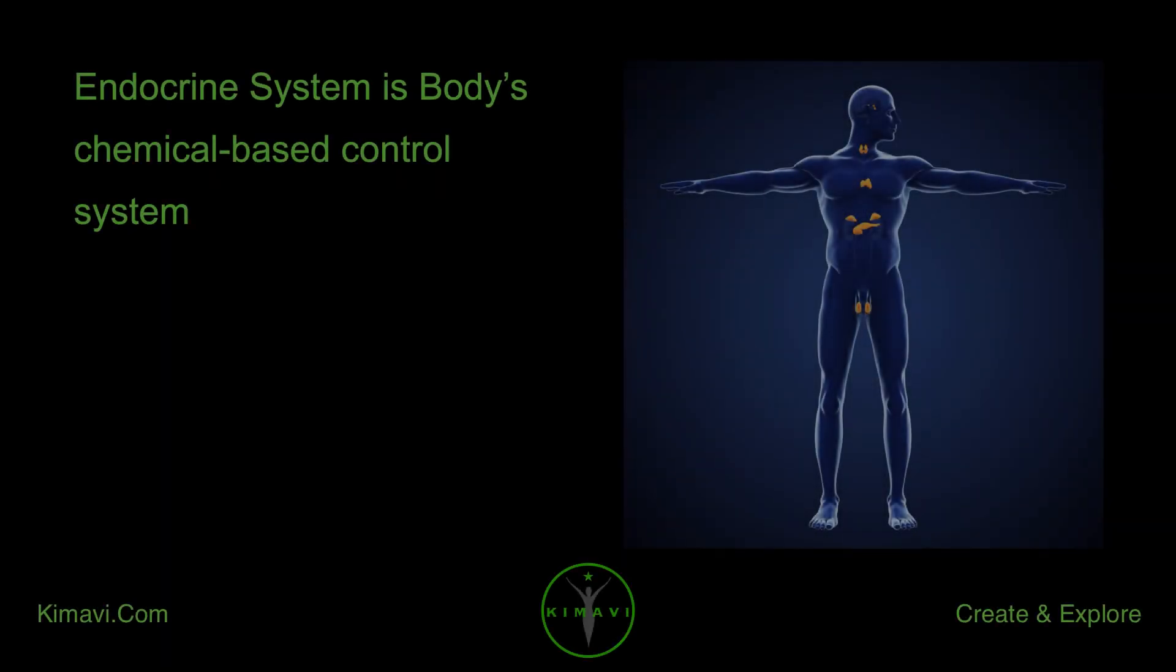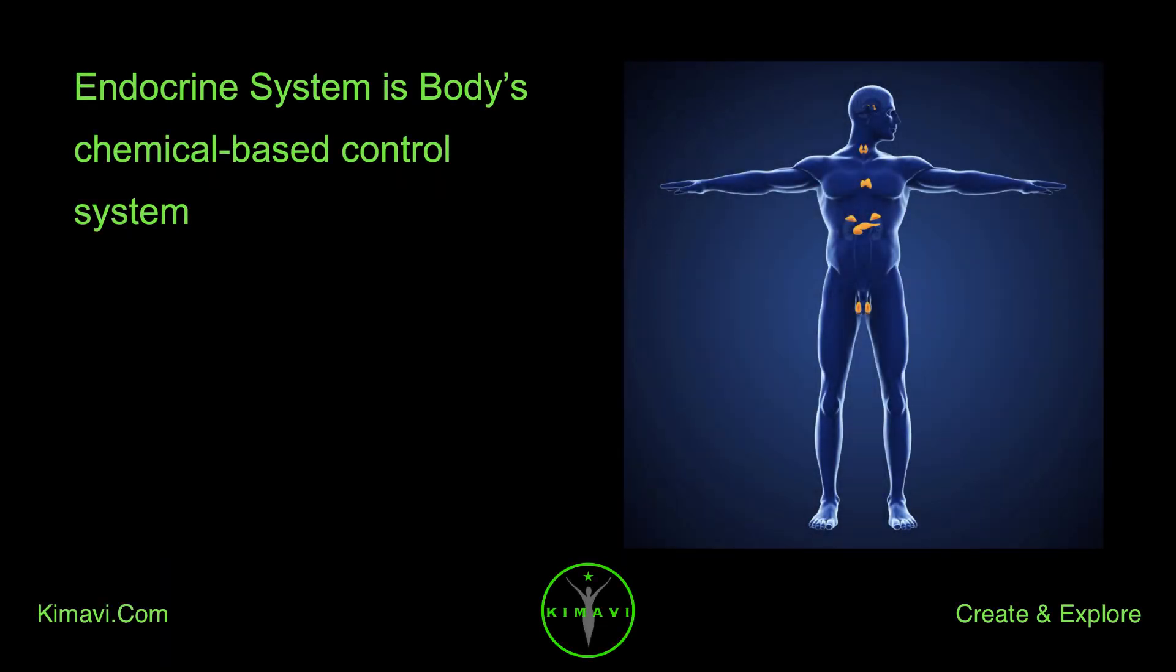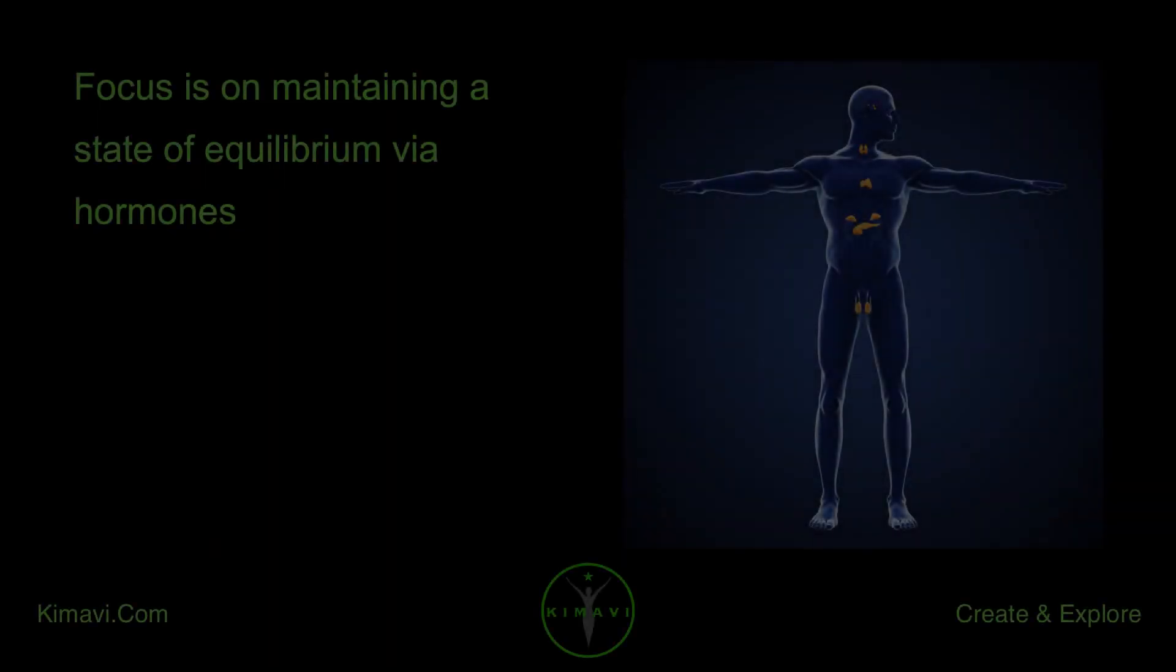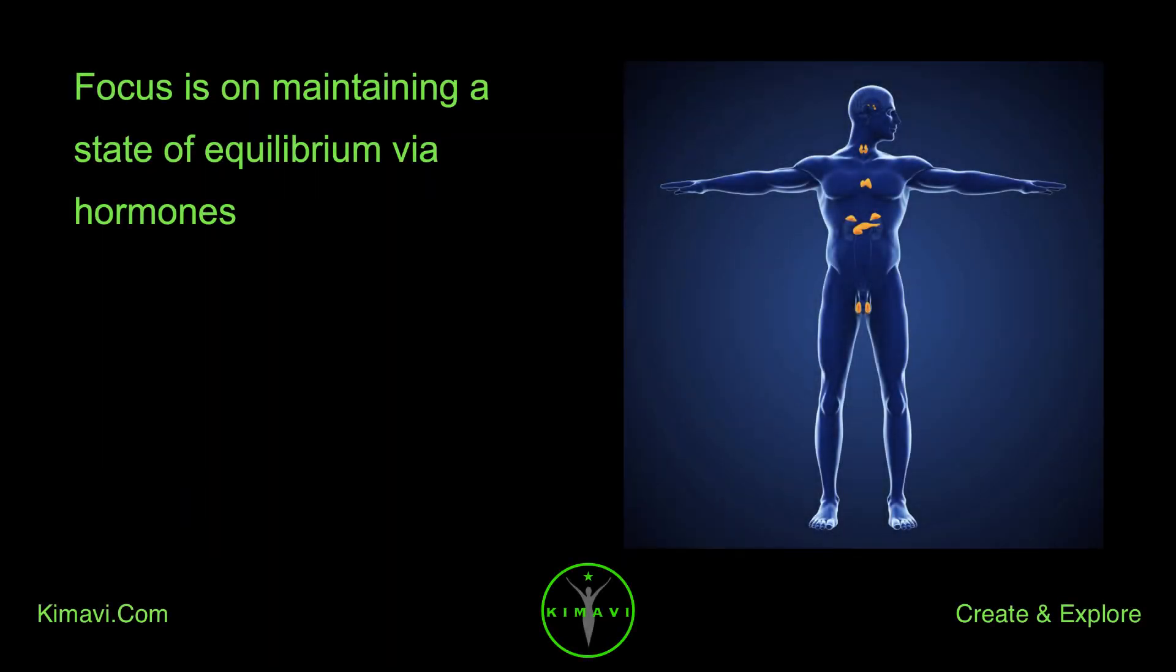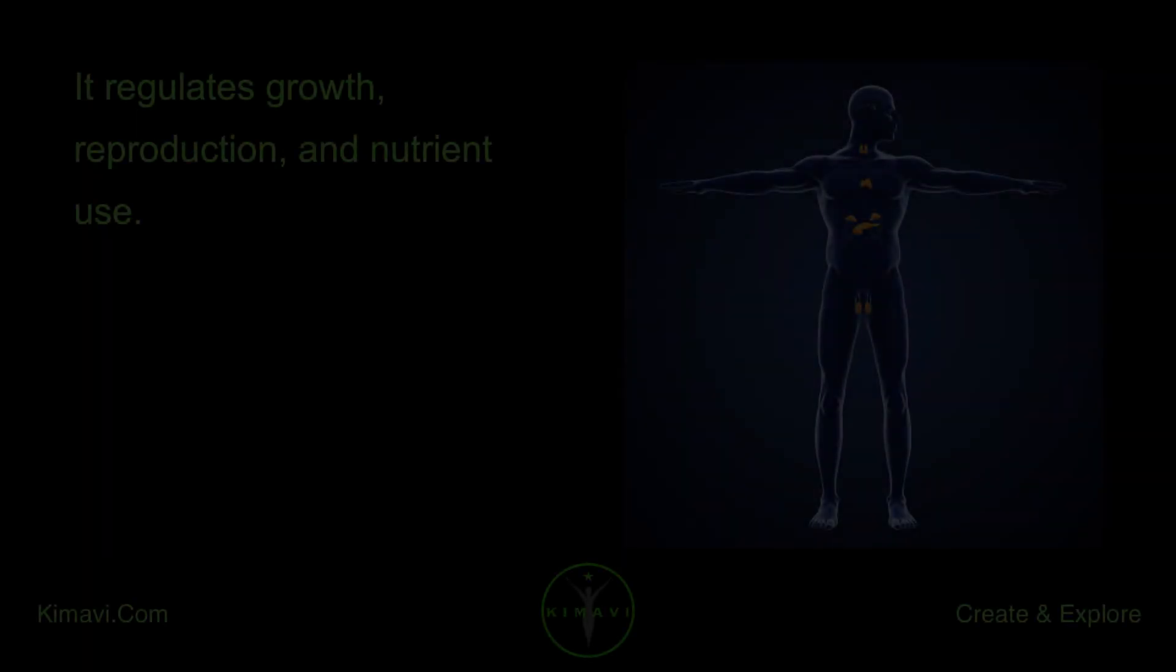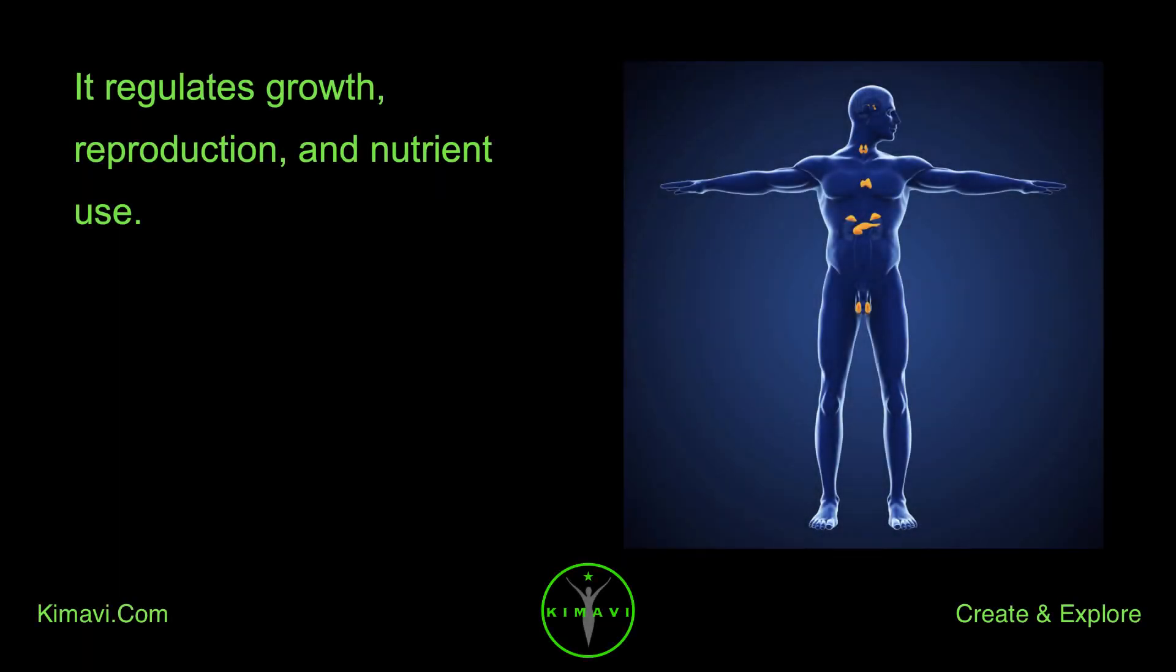The endocrine system is the body's chemical-based control system. Its focus is on maintaining a state of equilibrium via hormones. It regulates growth, reproduction, and nutrient use.